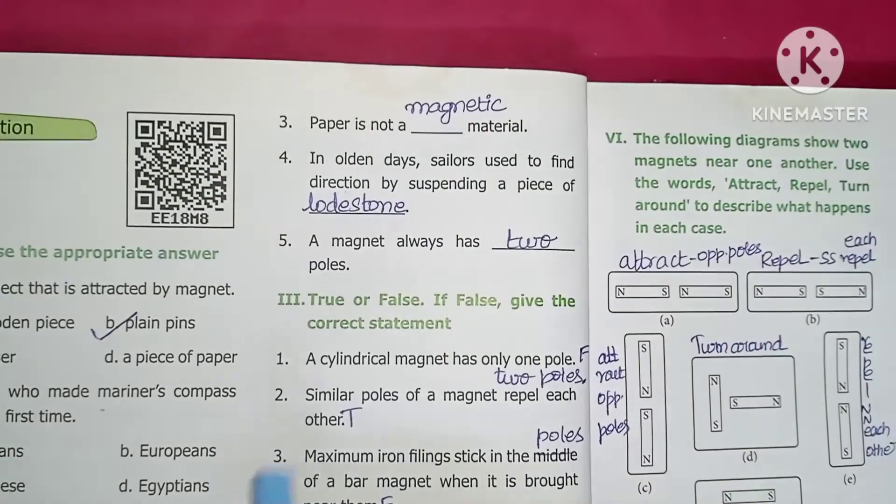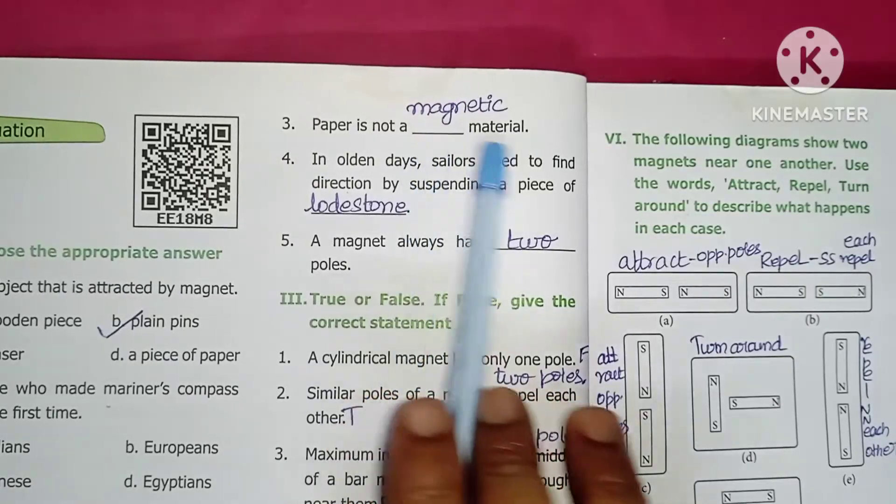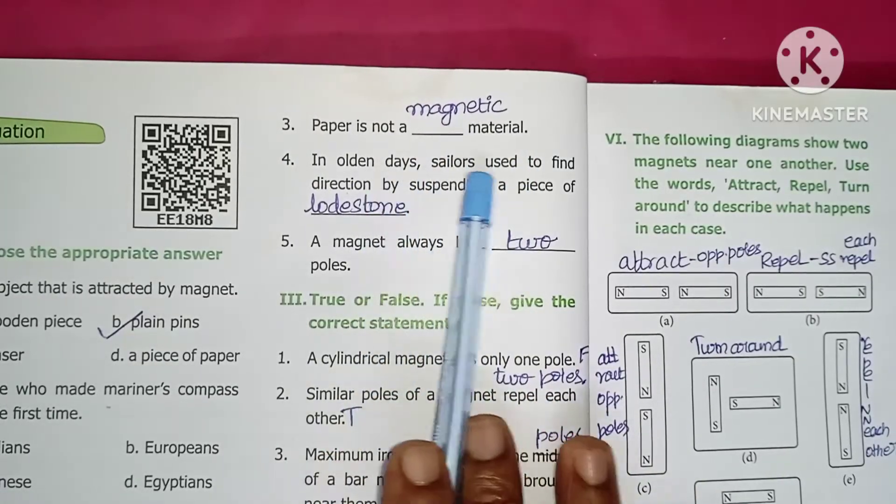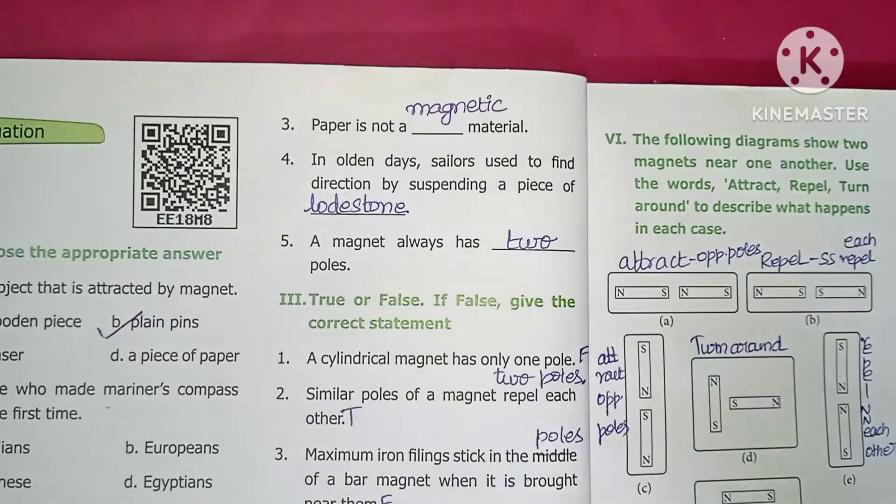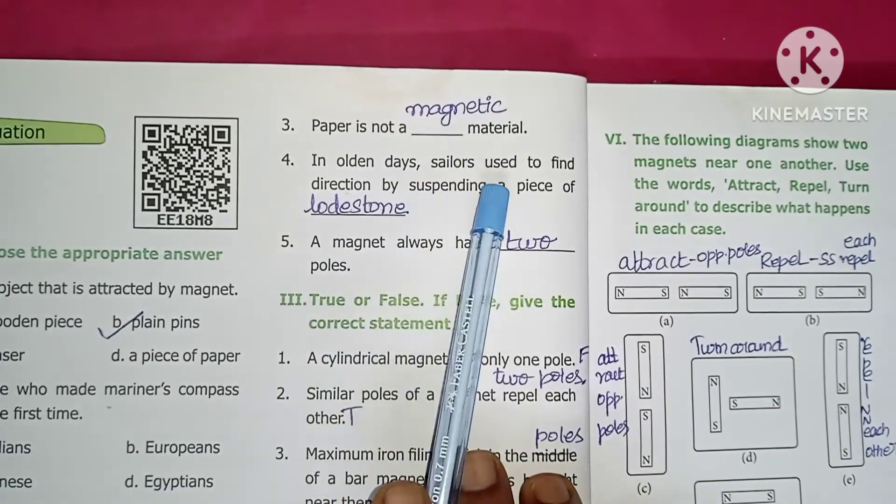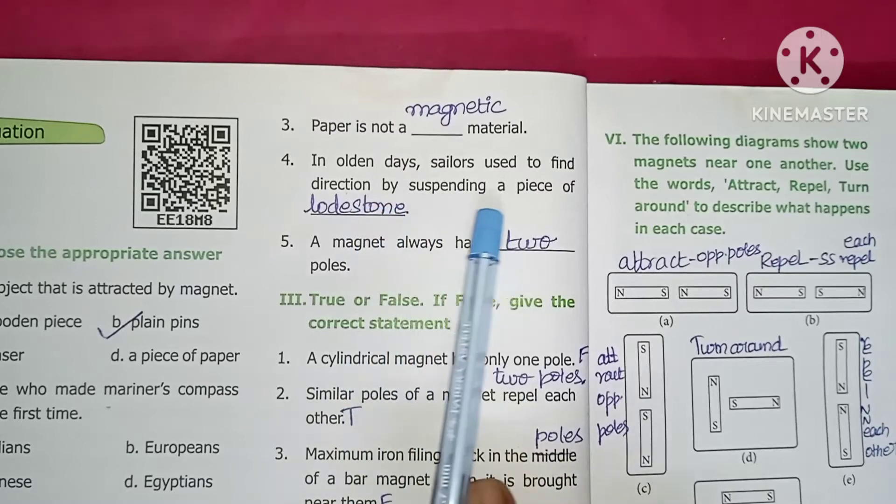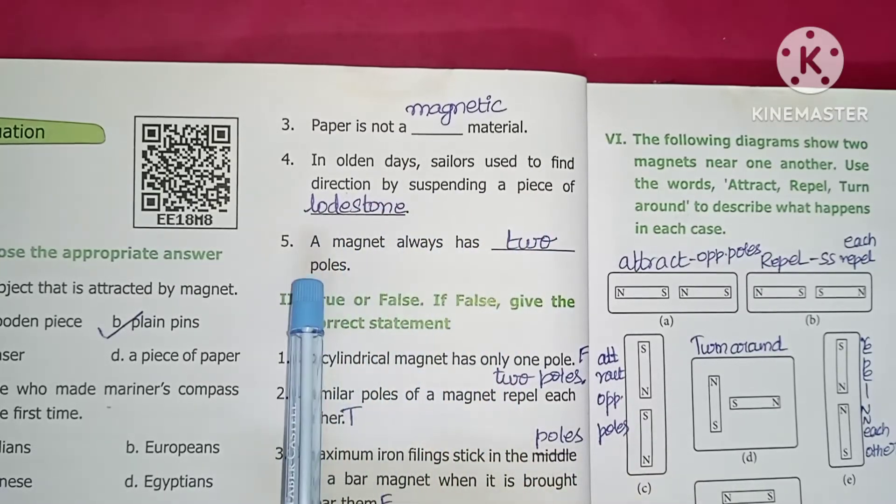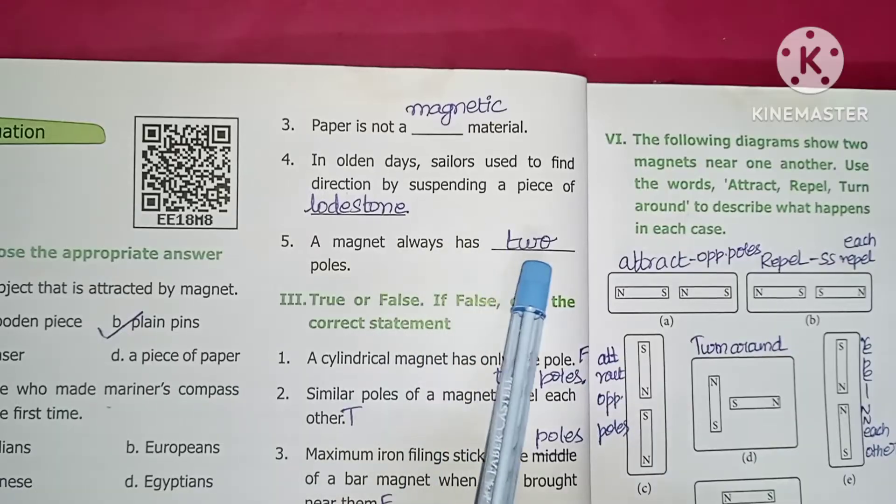Paper is not a magnetic material, meaning the magnet will not attract it. In olden days, sailors used to find direction by suspending a piece of loadstone. A magnet always has two poles.